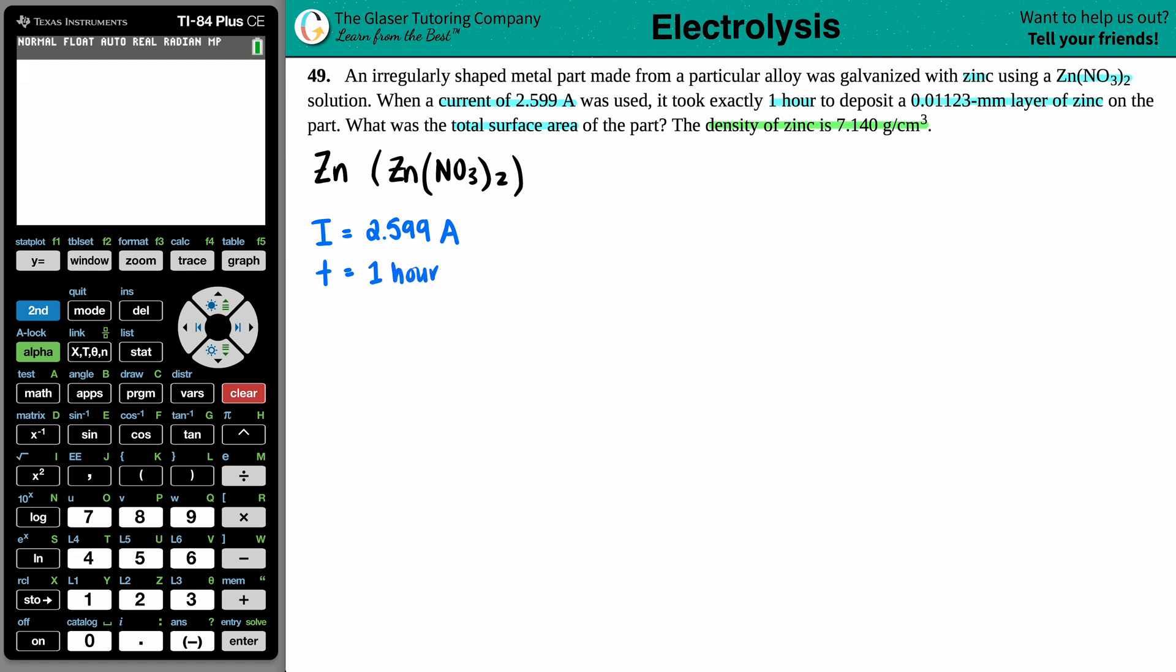They tell me I have some sort of distance. They tell me I have a millimeter layer, and that's 0.01123. I guess we could say D equals, but generally in chemistry we don't really have distance formulas because that's more for physics. But maybe I'll just put that up here, the zinc had a 0.01123 millimeter layer. Now we're looking for the total surface area.